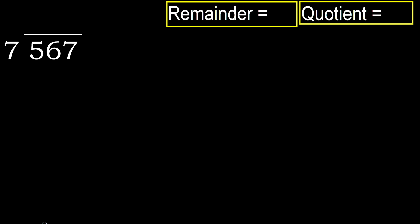567 divided by 7. 5 is less, therefore next. 56 is not less, therefore with 56.